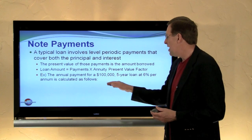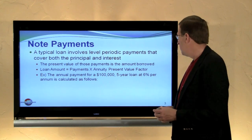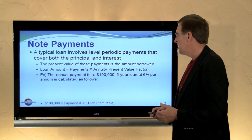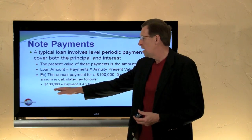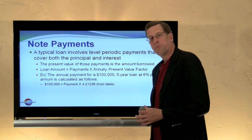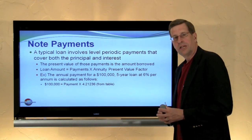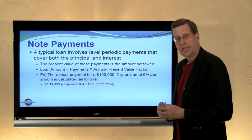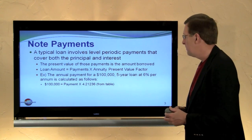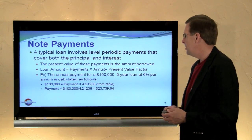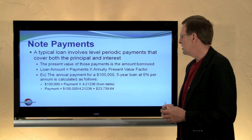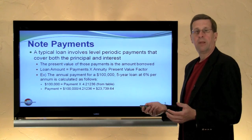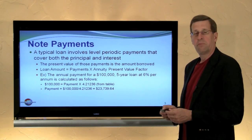For example, if we borrow $100,000 on a five-year loan with five annual payments and the interest rate is six percent, we ask ourselves: what should our payment be each year so that at the end of the fifth year the loan is paid off? The $100,000 loan equals the payment times the present value of that stream of payments. The present value factor is 4.212 — that's the present value of a five-year annuity at six percent. Solving for the unknown payment, we find that the payment is $23,739. So very simply, we've calculated the payment on this loan.